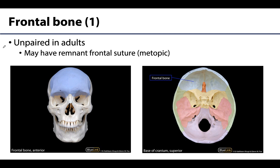For each bone I'll indicate whether it is paired or unpaired. The frontal bone in adults is unpaired — there's only one. But in the juvenile period it was actually two bones, with a suture running down this area called the frontal suture. Sometimes remnants of this suture persist into adulthood; that's called the metopic suture. It's not a pathology or a fracture — just a remnant.